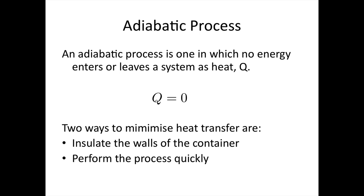On to new material: adiabatic processes. An adiabatic process is one in which no energy enters or leaves the system as heat, so Q is equal to zero. In reality, we can achieve this with a well-insulated container so that heat cannot pass easily through the walls, such as a thermos. The other way is to perform a process very quickly — it takes time for heat to flow from a hot body to a cold body, so if we perform a process very quickly, there is no time for the heat to flow.